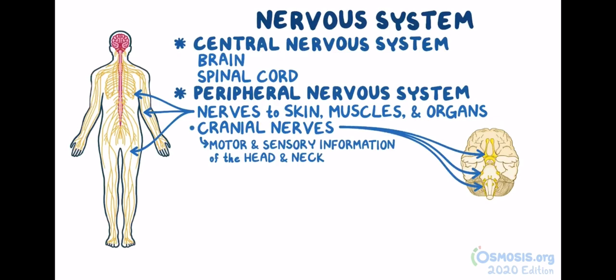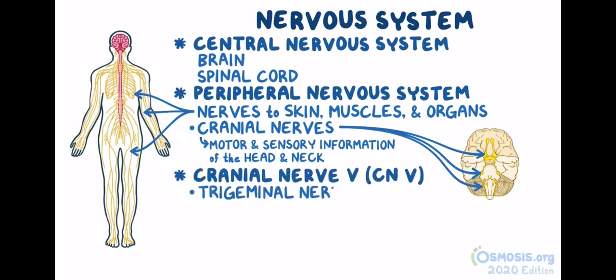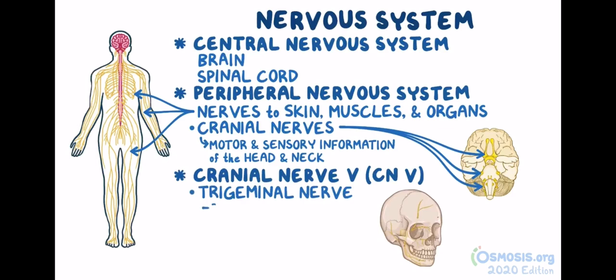A specific cranial nerve, cranial nerve 5, is the trigeminal nerve, and it's responsible for the sensation in the face. Its sensory neurons create a nerve cell cluster called the trigeminal ganglion, located in the bones on the side of the face between the eyes and ears.